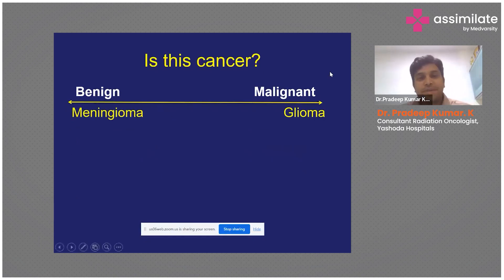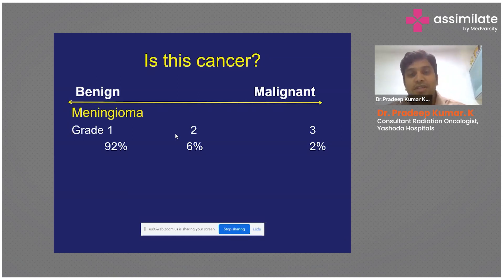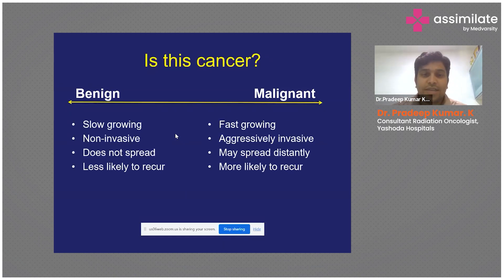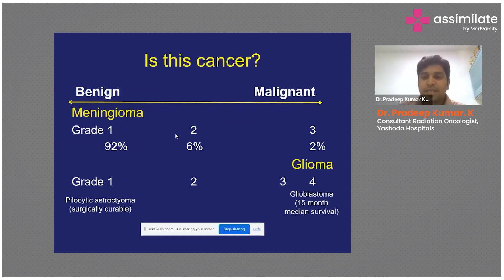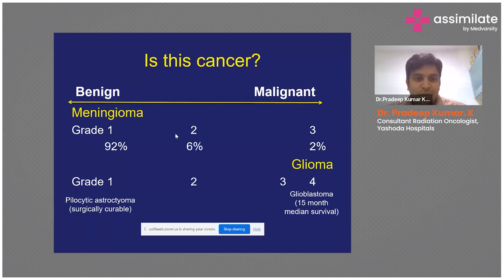The most common benign brain tumor is meningioma and the most common malignant one is glioma. These can be graded based on aggressiveness. Almost 92 percent of meningiomas are grade 1, while higher malignant grades are very rare. For gliomas, even in early stages, they can rapidly progress to glioblastoma — grade 4. High-grade gliomas are very aggressive, and once diagnosed, average survival is only around 15 to 24 months. Grade 1 gliomas, like pilocytic astrocytomas, share characteristics with benign tumors — they are slow-growing and surgically curable.